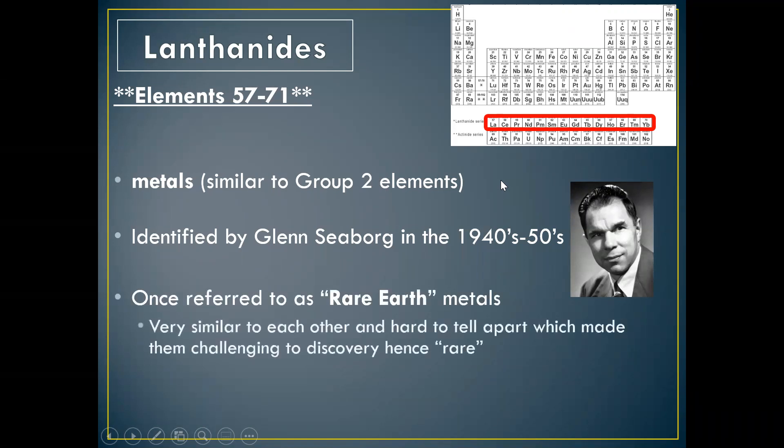And these were once referred to as rare earth metals instead of the lanthanides because they are very similar to each other and they were hard to discover. Once they started to discover one, they realized that there were others, but it was hard to tell them apart. So people thought they were rare. They're not rare. They're just hard to find and hard to identify. So they changed the name from rare earth metals to the lanthanides.